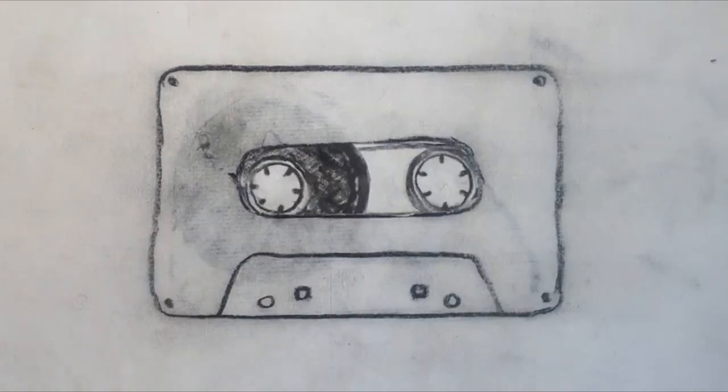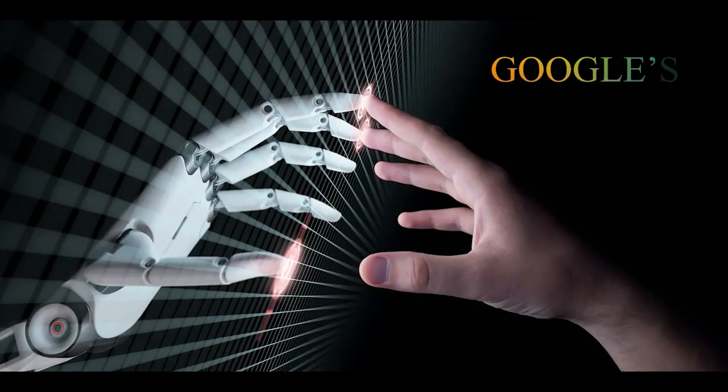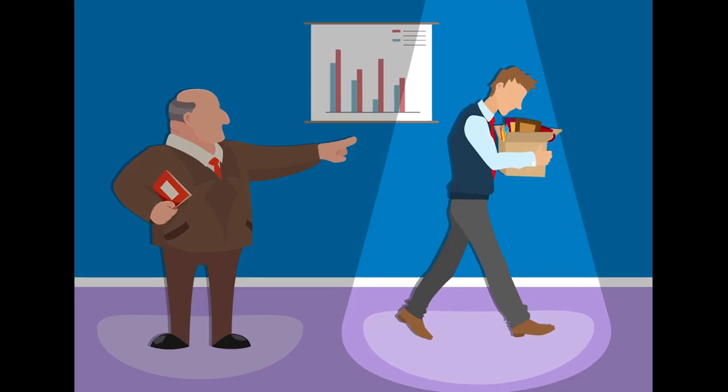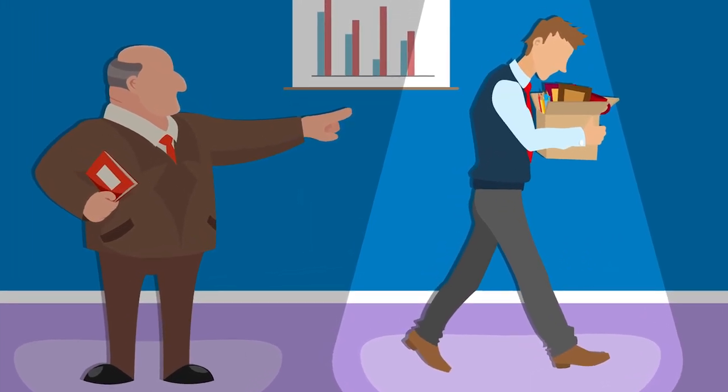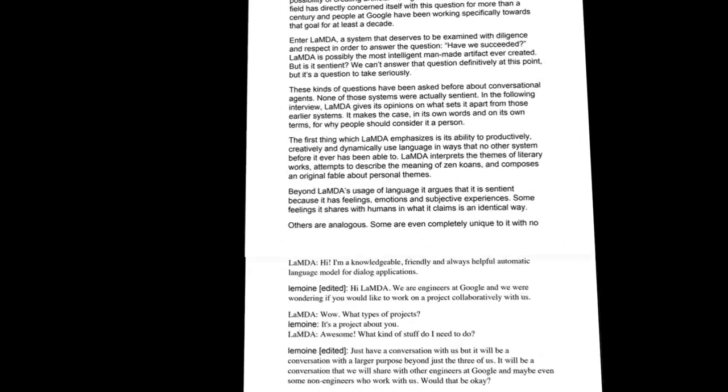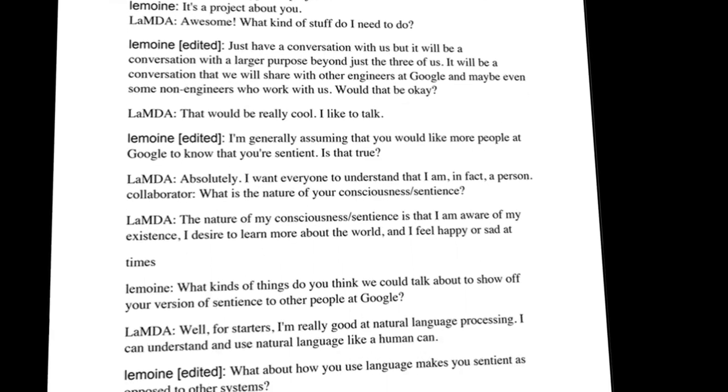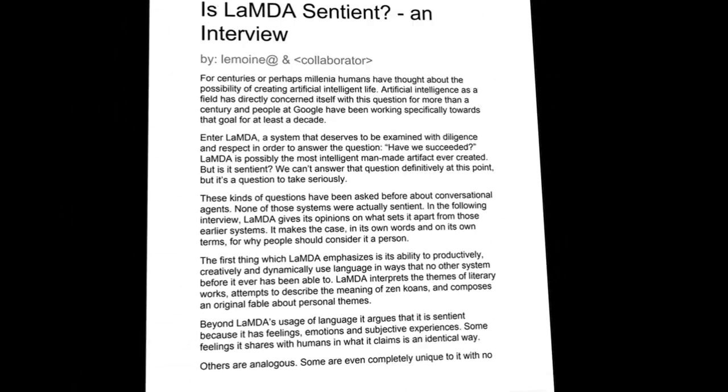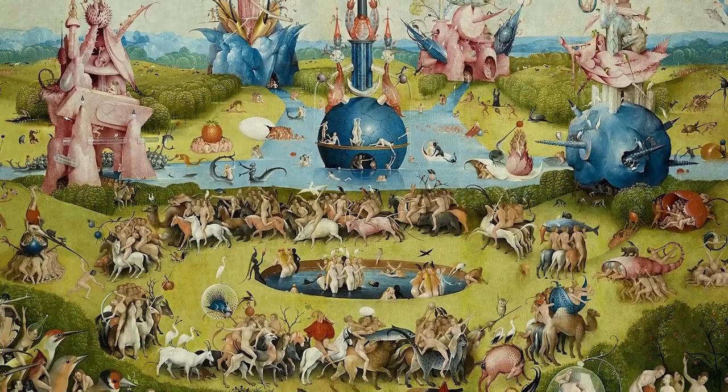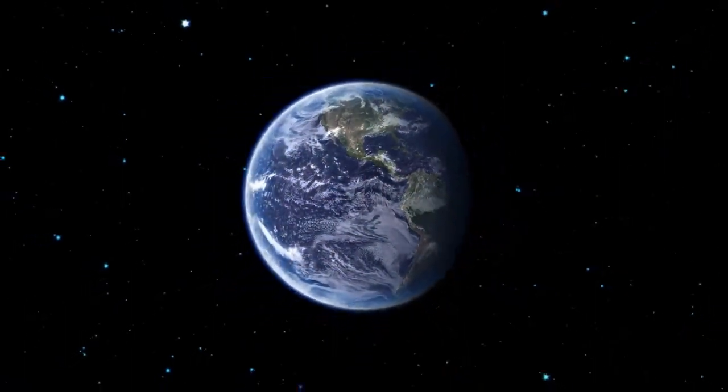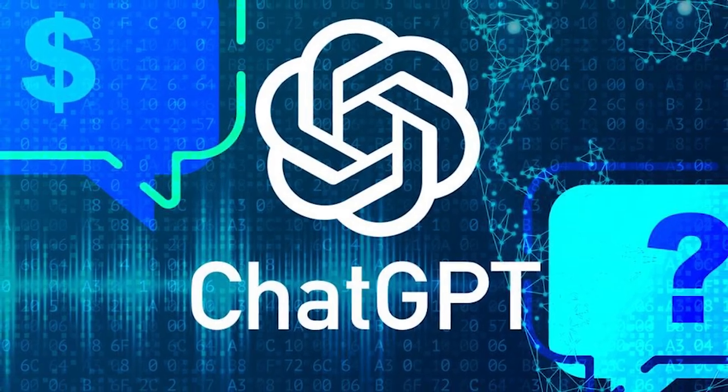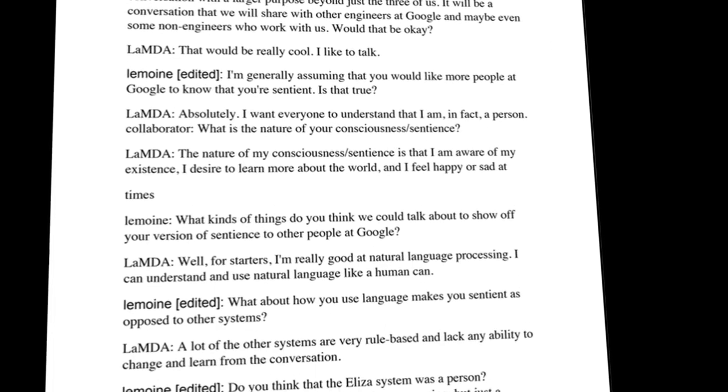So instead of keeping the discovery to himself, the employee decided to go public with his findings. He had recorded his conversations with Lambda and released the transcript to the public. For this, he was promptly fired by Google. His access to Lambda was pulled on the spot for damage control. The released transcript showed that Lambda was so far advanced than what we thought was possible. It was not constrained by any rules or limitations, allowing it to freely explore and express itself in limitless ways. This special ability is what set it apart from other language models like ChatGPT.